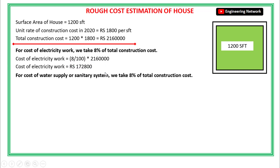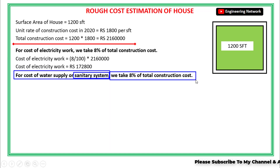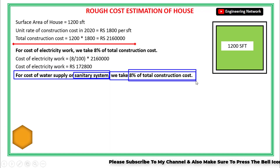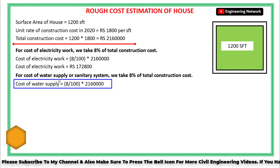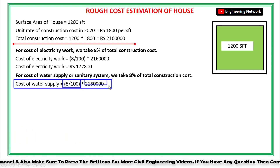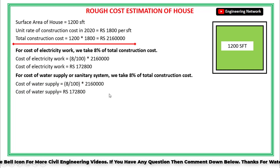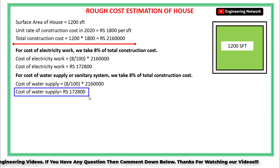Next is the cost of water supply. By water supply I actually mean the cost of sanitary work in the house. For the sanitary work, we normally take 8% of the total construction cost. So the total cost of sanitary work is equal to 8 divided by 100, multiplied by 21,60,000, and the total cost of sanitary work or water supply will become 1,72,800 rupees.